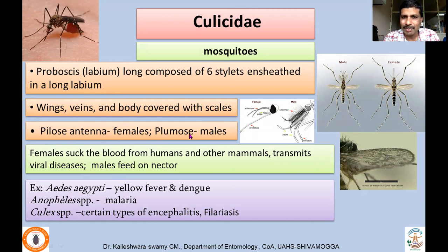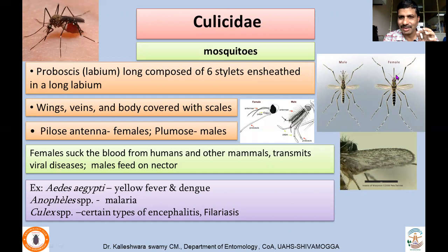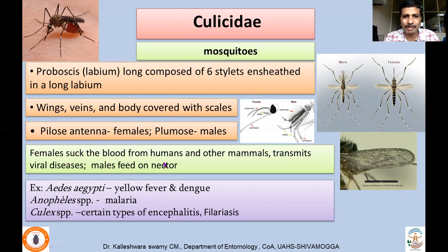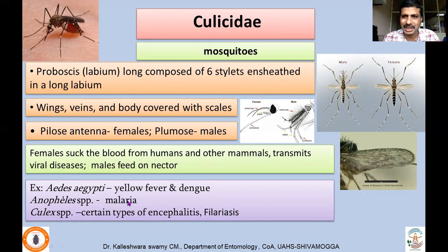Antennae in females are pilose type and plumose in males — that's how you distinguish the sexes: male mosquito antennae have many hairs whereas female antennae have very few at the junction of large plumed segments. Female mosquitoes suck blood from humans and other mammals and transmit viral diseases, while males feed on nectar. Examples: Aedes aegypti transmits yellow fever and dengue, Anopheles transmits malaria, and Culex transmits certain types of encephalitis and filariasis.